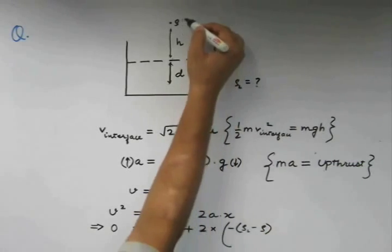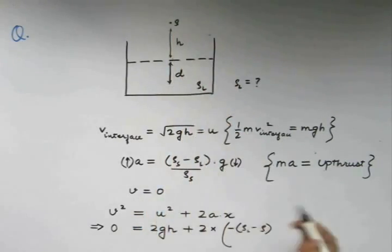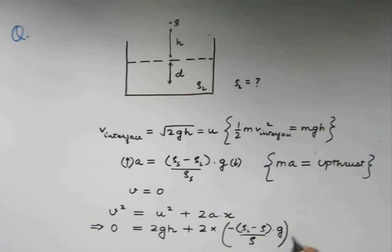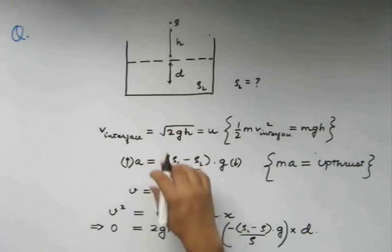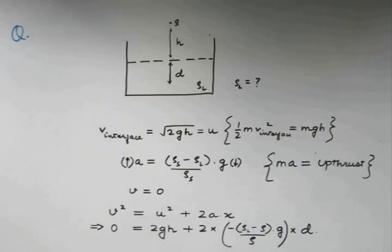Note that we considered that the density of this point mass is rho. So, rho s turns out to be rho divided by rho times g. This into d. This equation will now give us the maximum depth d gone down by the body or the point mass.